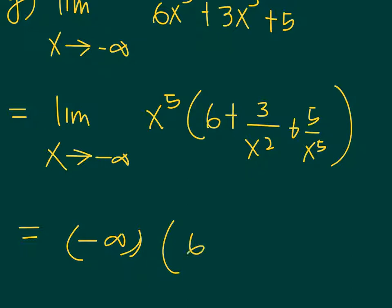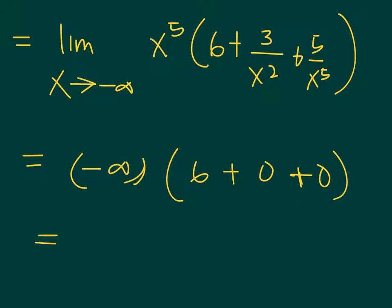But inside, constant is constant. Something over x raised to an exponent will be 0. So this will be negative infinity times 6, and 6 will not matter because this will still be negative infinity.